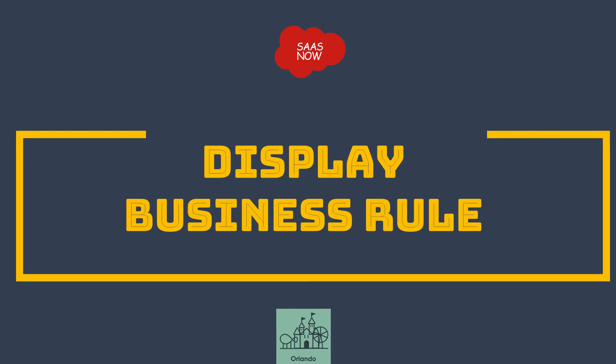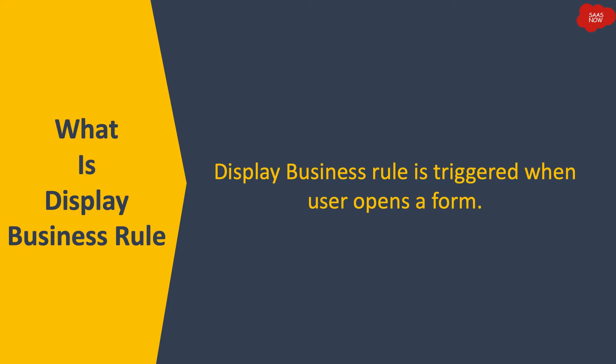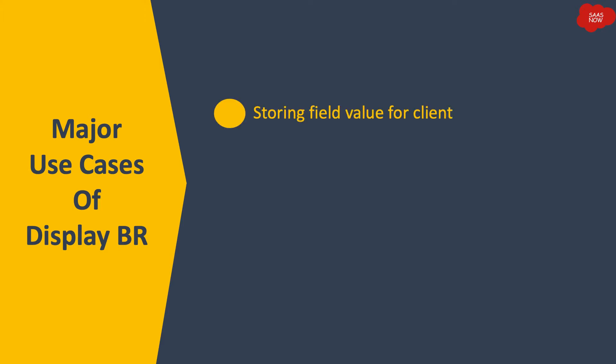What is a display business rule? A display business rule is triggered when a user opens a form. The major use cases are: storing field values for the client — if you need to get a value from the server and populate it on the client, you can use a display business rule with g_scratchpad. Another major use case is displaying a message on the form to users.